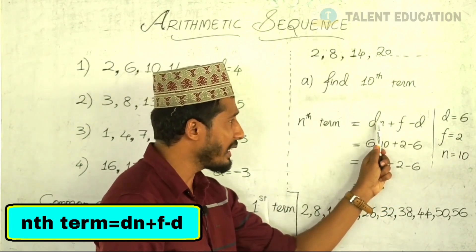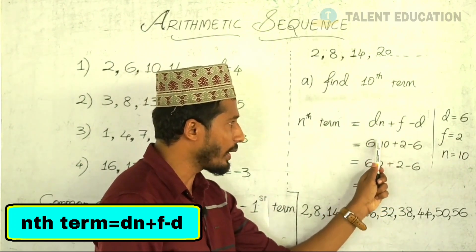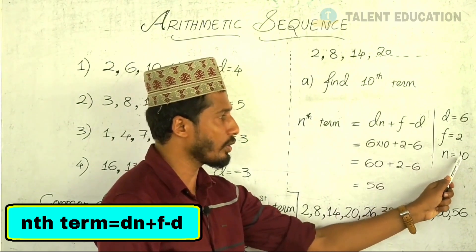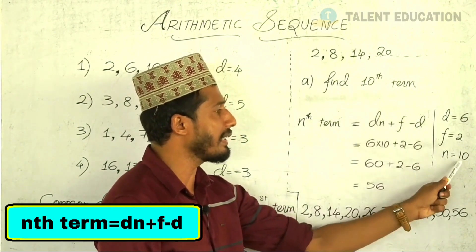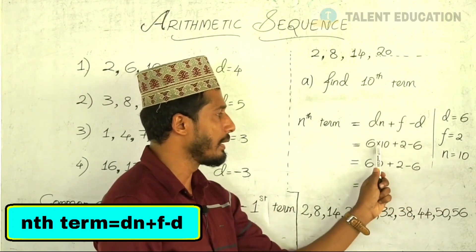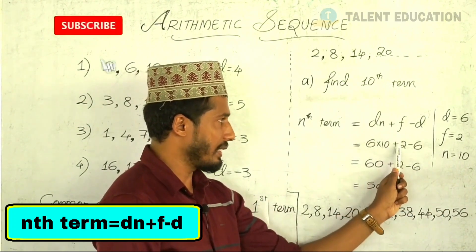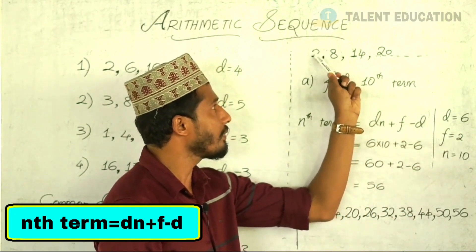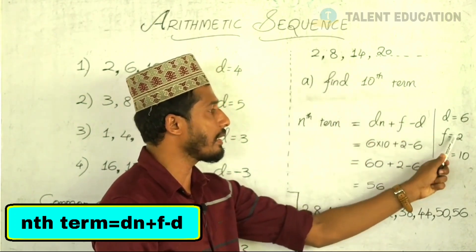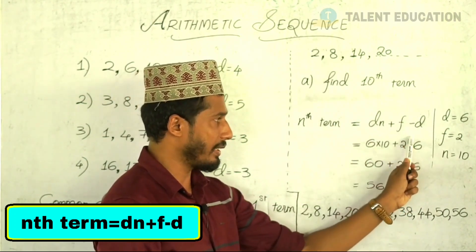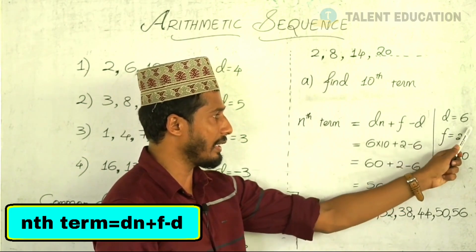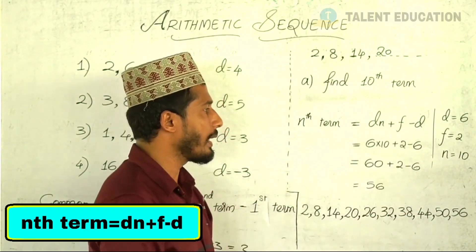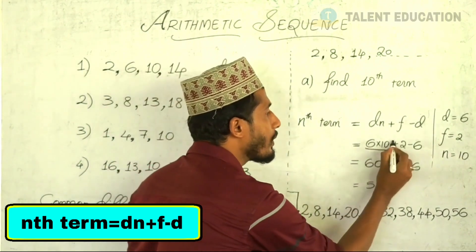Now, the formula is equal to n. We will use n. What is n? F is equal to f. This is equal to d. D is equal to d. That is equal to 60. That is equal to d. We will use n.